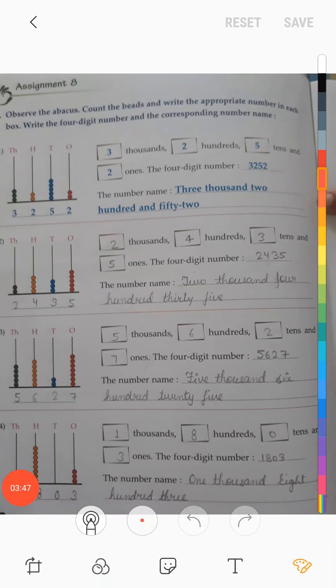Now next page number is 12, assignment 8. Observe the abacus, count the beads, and write the appropriate number in each box. Write the four-digit number and the corresponding number name.